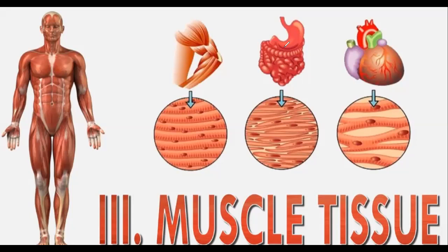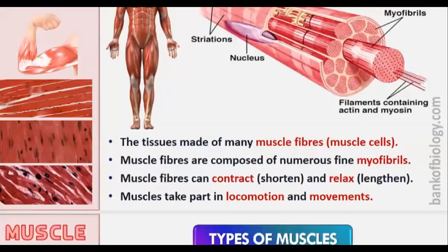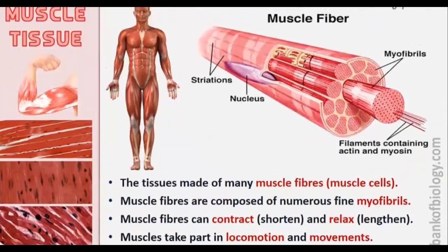Let us start with the next type of tissue, that is the muscular tissue. As shown in our diagram, that is the muscle fiber. Muscle fiber consists of myofibrils. Myofibrils are fiber-like structures where one cell is formed. The tissue is made up of many muscle cells or muscle fibers, and these muscle fibers are composed of numerous fine myofibrils.